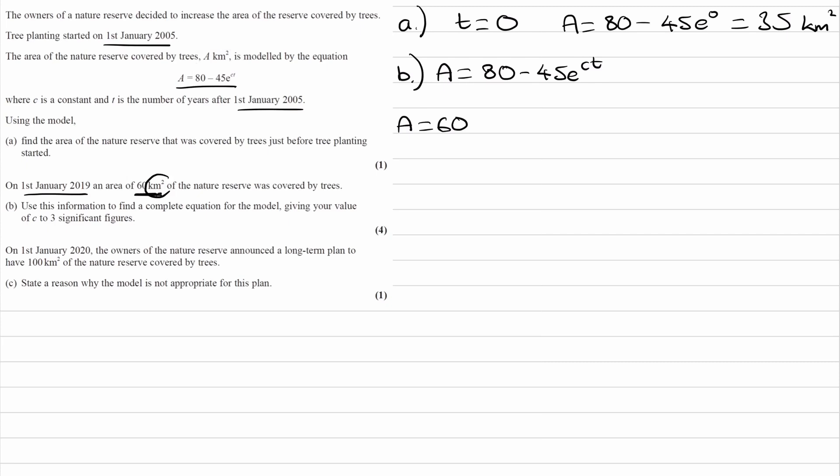For the time, we know it's the 1st of January 2019, and T is the number of years after 1st January 2005. Take away the two years, we get 14. So T is 14. We can put that into our equation: 60 = 80 - 45e^(14C). If you hadn't already got this equation, try rearranging it for C and you'll have your answer.